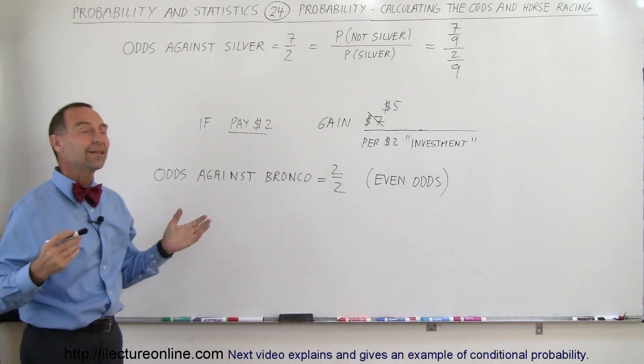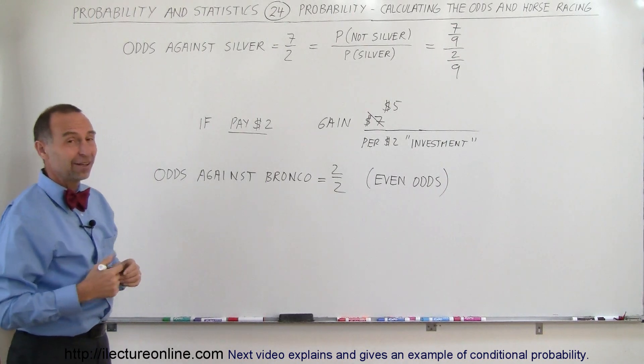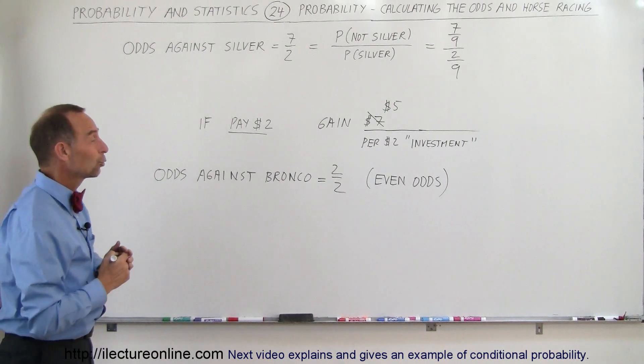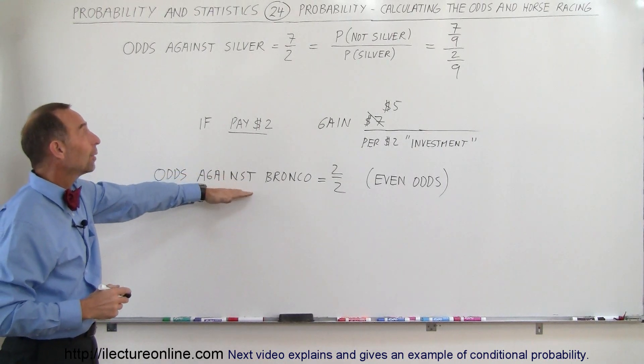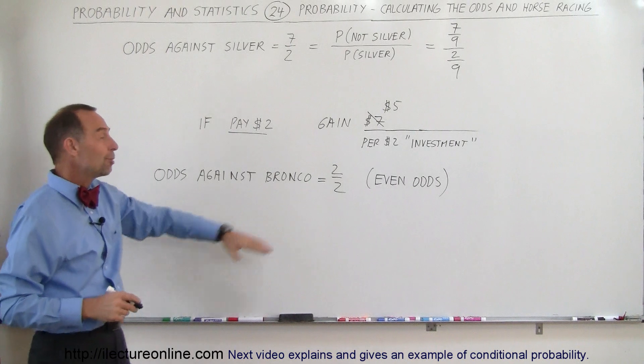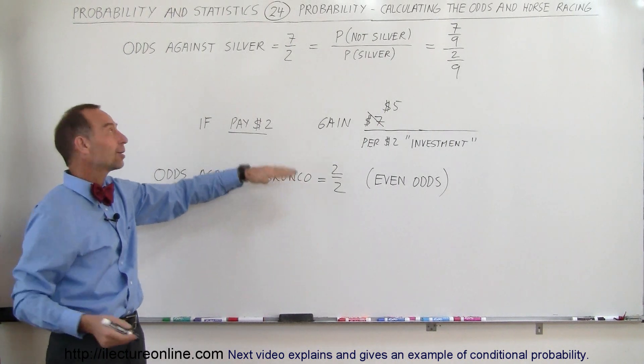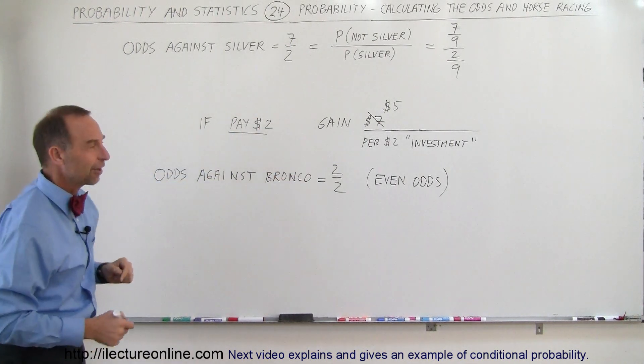That's not a good deal, but then, of course, Bronco probably was a big favorite and wasn't a lot of chance that any other horse would win. So, let's say we have Bronco in there and you have Silver in there and you bet on Bronco, you get your money back, you bet on Silver, you make $5 on the $2 investment.